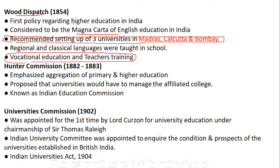Hunter Commission emphasized the aggregation of primary and higher education. It proposed that universities should manage affiliated colleges — affiliation was brought up or proposed by the Hunter Commission. This was seen as a question in previous years. The Hunter Commission is also known as the Indian Education Commission — two different questions appeared on these two points in two different years.